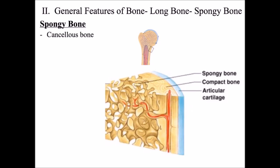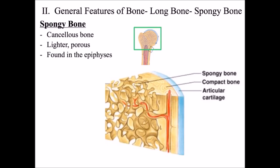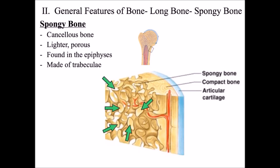The second type of bone is spongy bone, also known as cancellous bone. Spongy bone is very light and porous — it has a lot of holes. It is found in the epiphyses of long bones and is made up of structures called trabeculae, which are bony bars and plates. Although spongy bone is porous, it is actually very strong because the trabeculae run in all different directions, meaning spongy bone can withstand forces from all different directions.